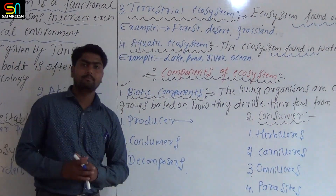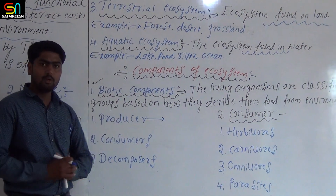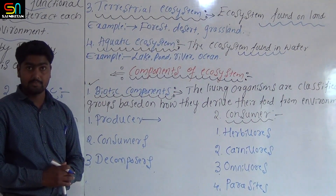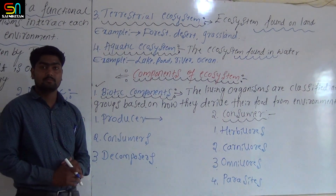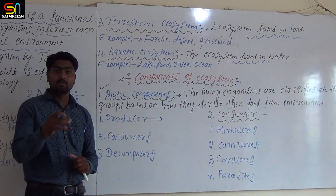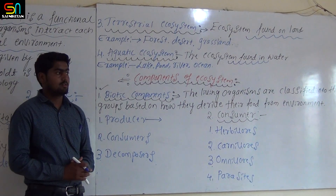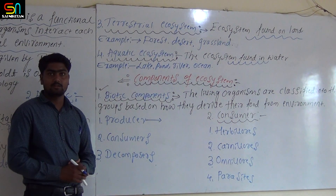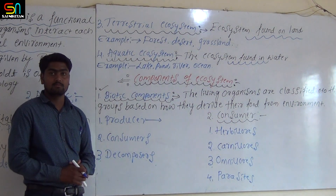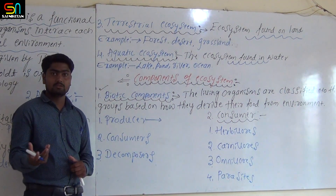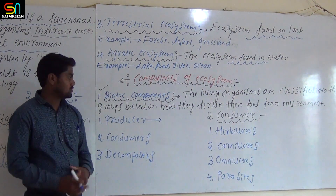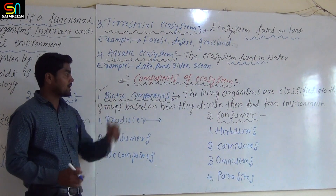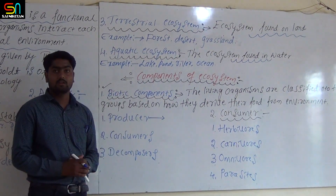The biotic component of an ecosystem is also called the living component of an ecosystem. It includes plants, animals, producers, consumers, and decomposers.